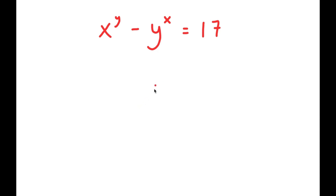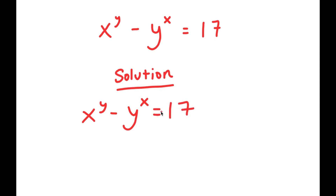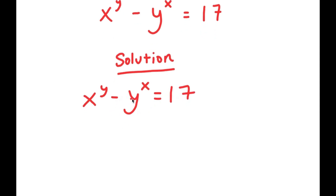So in this problem, I have x to the power of y minus y to the power of x is equal to 17. To solve this problem, I'm going to first rewrite the equation. Now, just by looking at this equation, what can we infer?